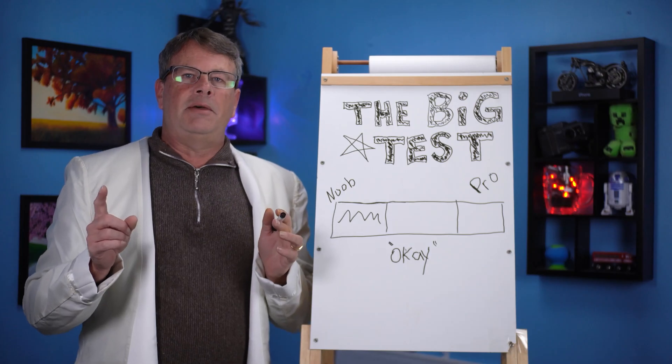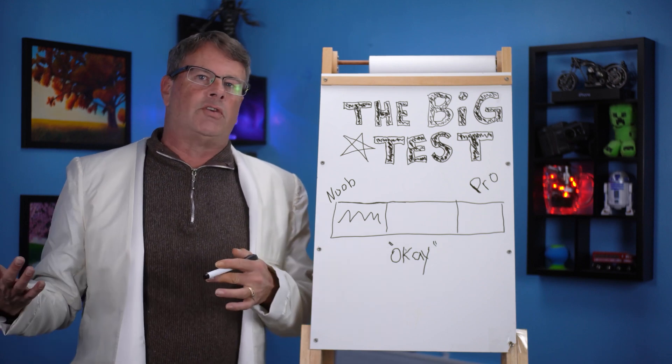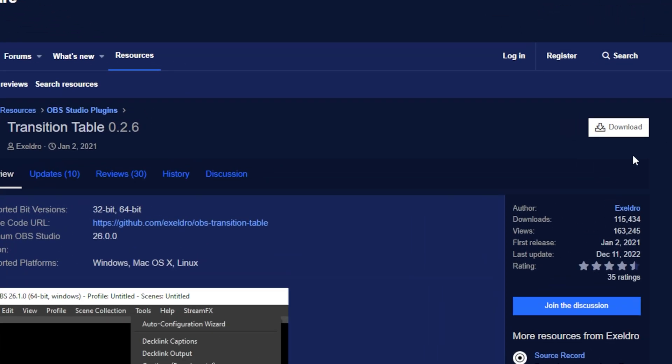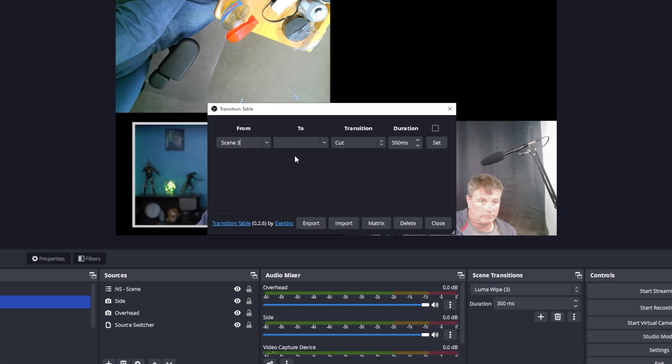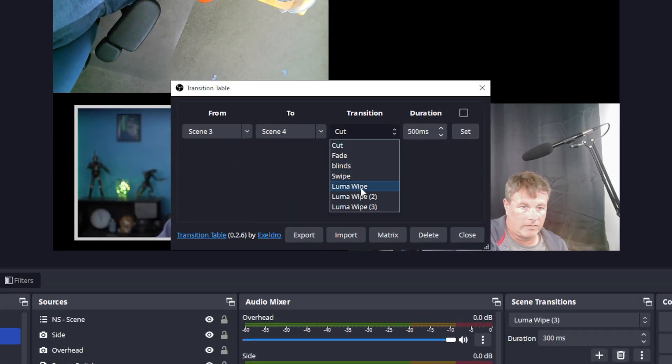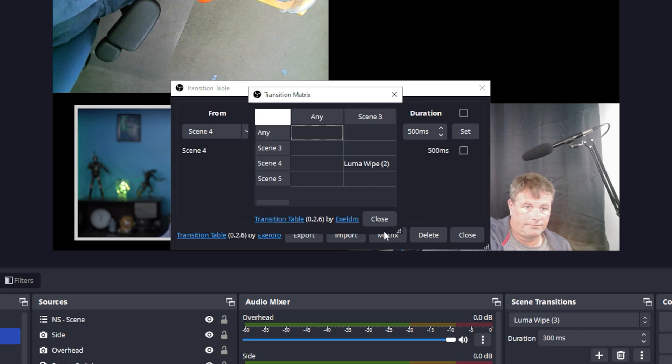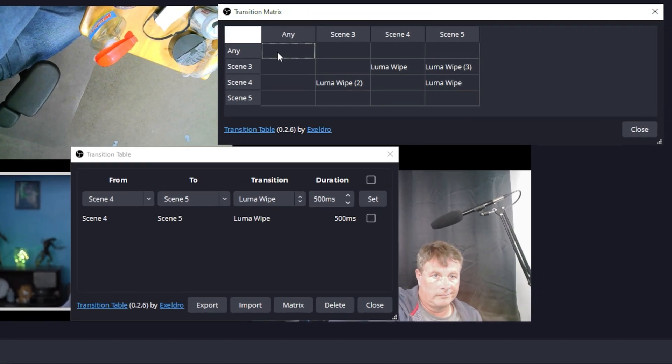You can even take that one step further with the transition matrix. It's a simple plugin that takes a few seconds to download and install and it's totally free. And once you do, you can choose a different transition for each scene depending upon the scene that you're actually coming from.